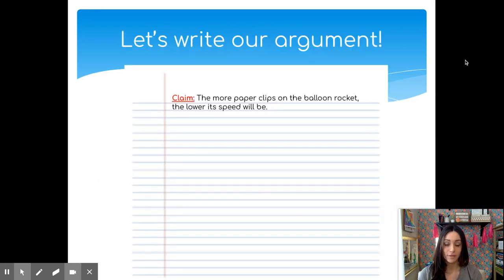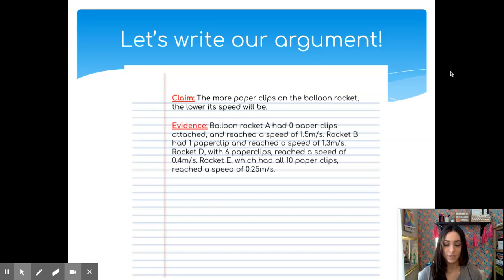Let's go ahead and find the appropriate evidence for our argument. Remember that we made the claim that the more paper clips that we put on the balloon rocket, the lower its speed was. Our evidence here was, of course, the number of paper clips on each of my balloon rockets and the speed that it was able to reach. You will notice here that I didn't just include one or two of my pieces of evidence. I included several different examples of the number of paper clips on the rocket and the speed that it was able to reach. Ideally, you would actually include all of them to make for the strongest and most convincing argument.